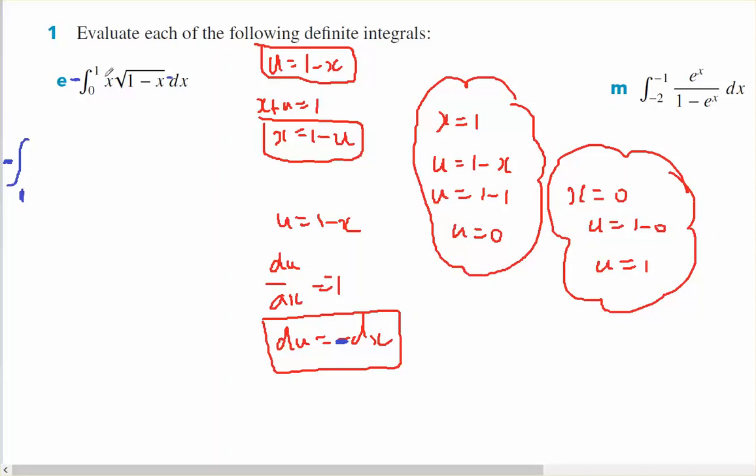When x equals 1, u equals 0. So x is the same as 1 minus u. And u to the half, du.